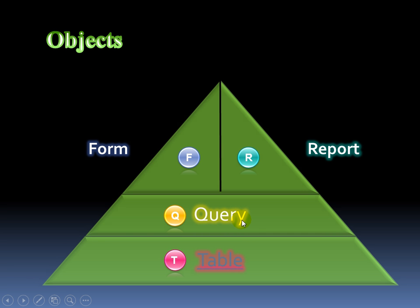Now, Access has what are called objects, and as we just learned, the foundation of all the objects are tables. Because without a table of data, you don't have a database. You've got to have some data, and to store the data we create a table, breaking it down into the smallest, most meaningful parts. For example, we had a table all based upon employees. Keep that in a separate table, and keep track of all the clients in another table — first name, last name, address, and so on.